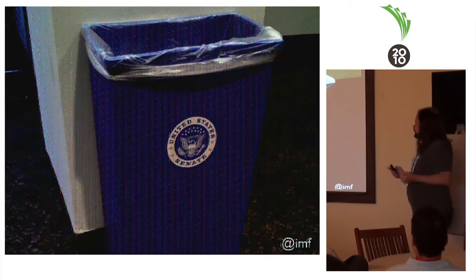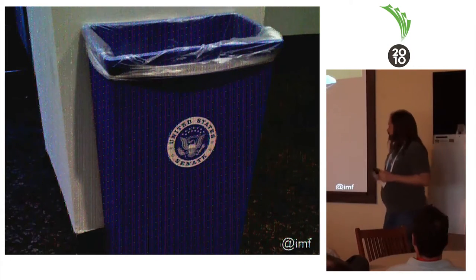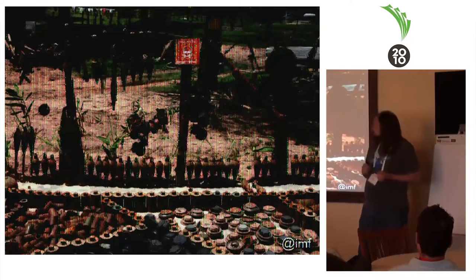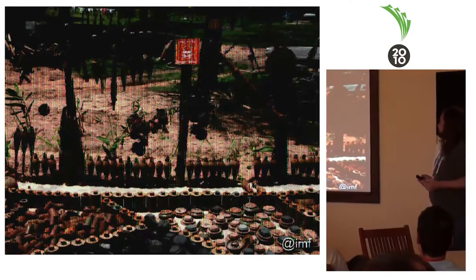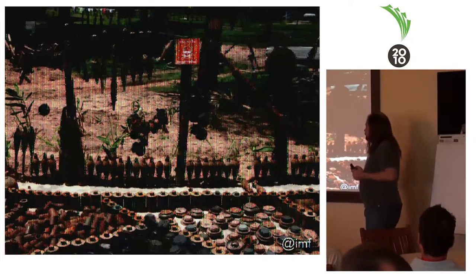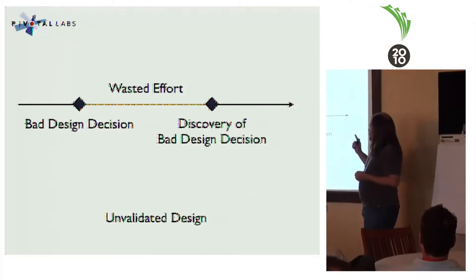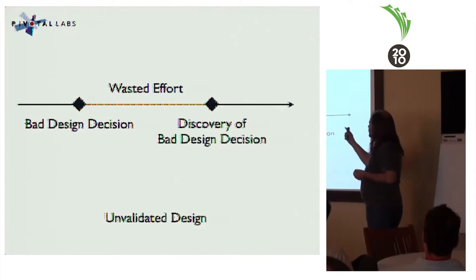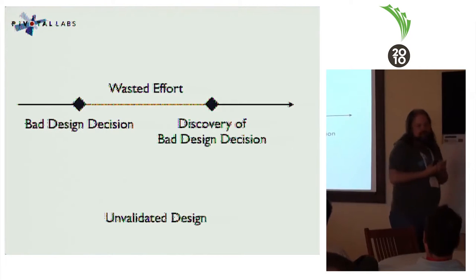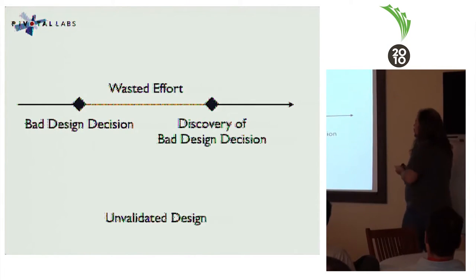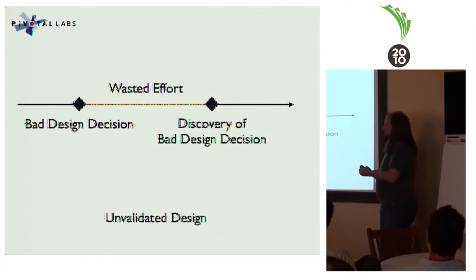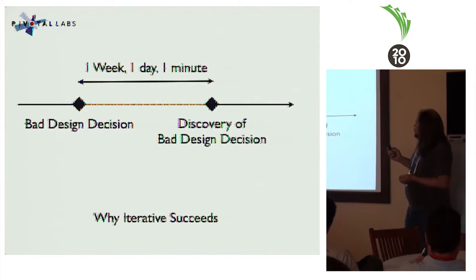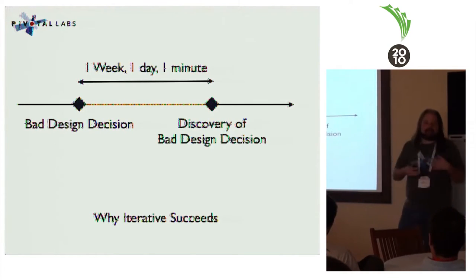A lot of that waste is genuine. Some of that waste is actually dangerous — it creates problems down the road that are sort of hidden landmines. The real problem I want to talk about most is unvalidated design. This process is natural; we're going to make design decisions and some of them are going to be wrong. The problem isn't so much that we are making wrong design decisions — it's that we're spending a lot of time between when we make a bad design decision and when we correct it. If it's a month or a year, that's bad. If it's a week, a day, or a minute, that's just part of a healthy design process.